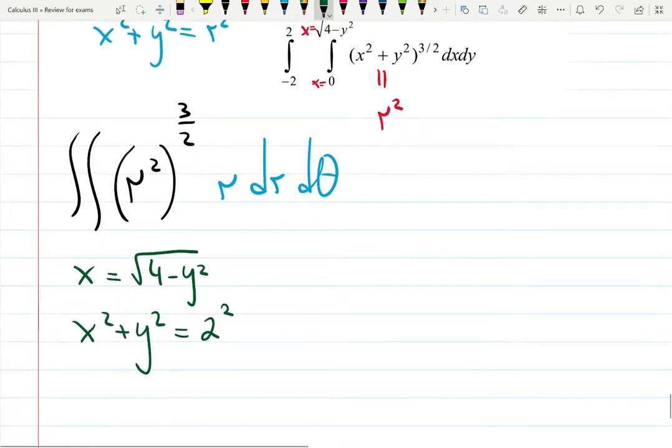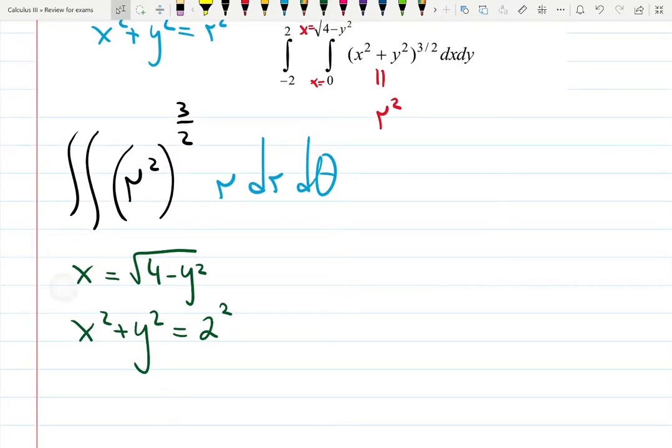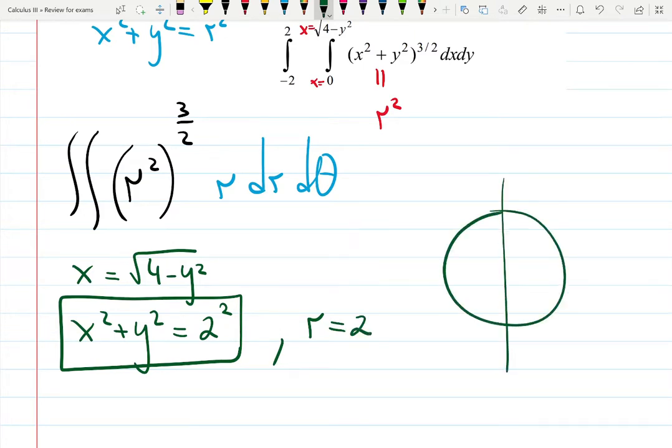That is a circle radius 2 centered at 0. But remember we start with only positive x. So we have a right part of the circle only because x has to be positive.